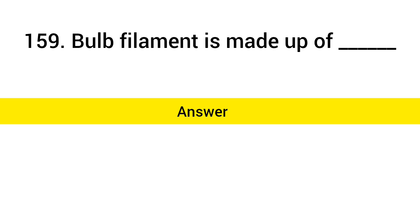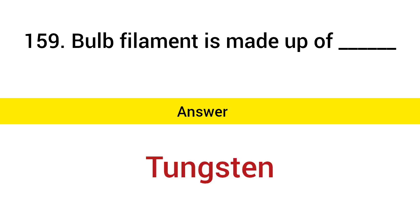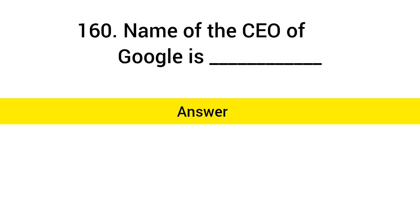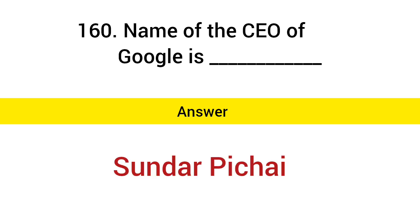Bulb filament is made up of? Answer: Tungsten. Name of the CEO of Google is? Answer: Sundar Pichai.